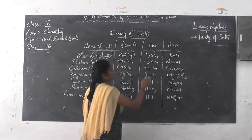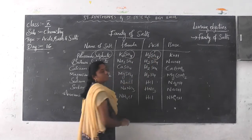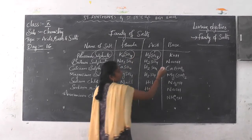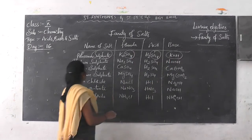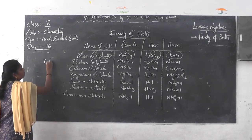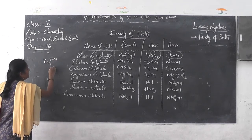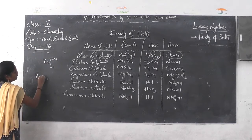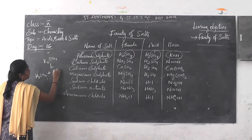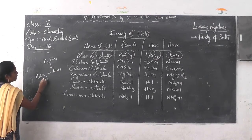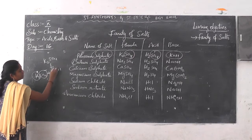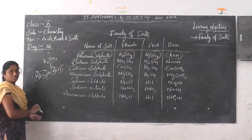What is the acid here? Sulphuric acid. And what is the base here? Potassium hydroxide. So, K2SO4 is the combination of H2SO4 plus KOH. You can see here — this is the positive and this is the negative.